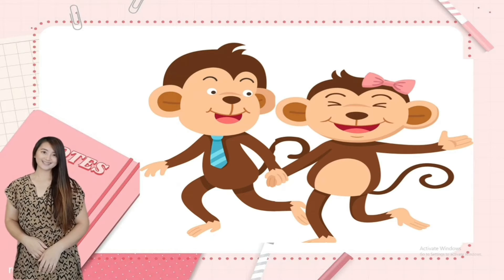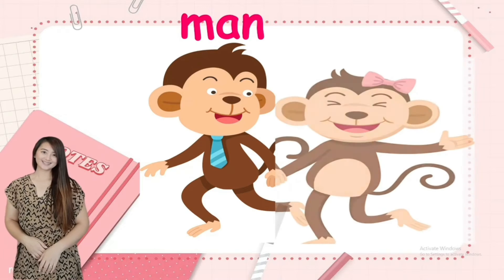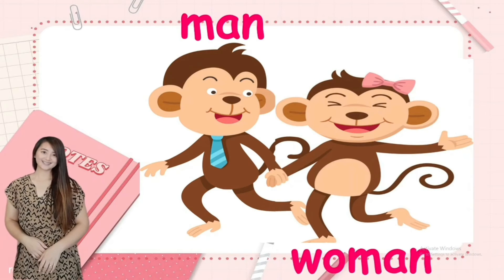Next, we have man and woman. This monkey is a man, or a boy, and this monkey is a woman, or a girl. Man and woman are opposite ways.